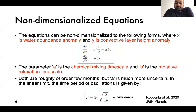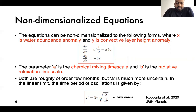These two equations basically show an oscillator. There are two parameters: A, the chemical mixing timescale, and B, the radiative relaxation timescale. At the cloud base, these two timescales are on the order of a few months. The time period of this oscillation comes from something like the geometric mean of these two timescales, and it turns out to be a few years, which is what we also observe at the cloudtops.